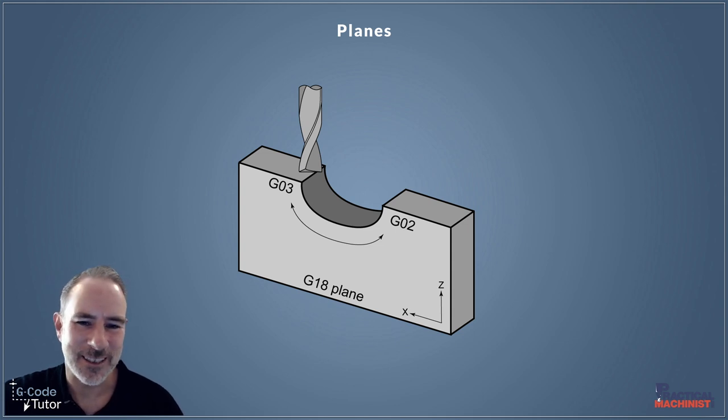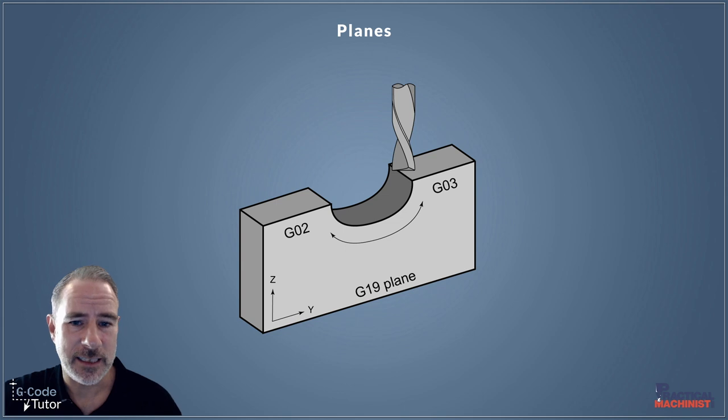A G18 plane would enable us to cut a radius in this direction. So as we switch over from G17 to G18, we would switch the direction we can cut our radius. And G19, of course, is the mirror image of that.